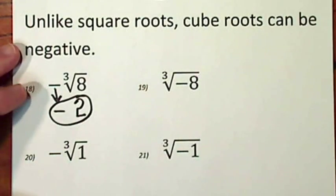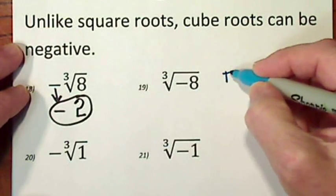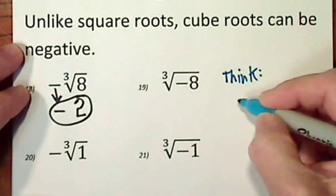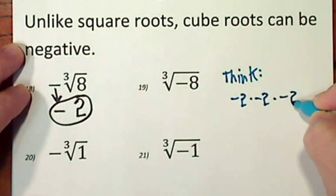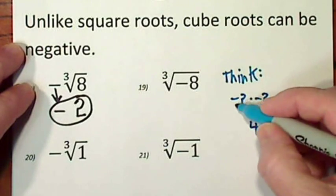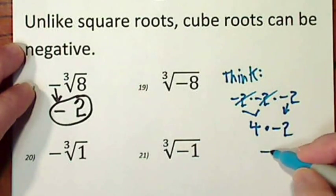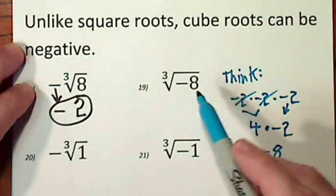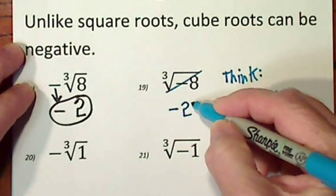Negative 2 times negative 2 times negative 2, these would give you a positive 4. That's gone, bring this guy down, times negative 2, this gives you a negative 8. So you can see that's what we're looking for. So the cube root of negative 8 is negative 2.